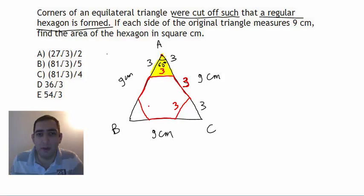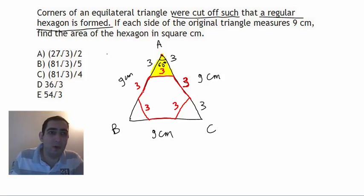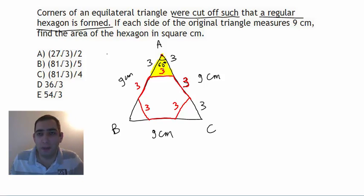By the same reasoning at each corner, all sides of the hexagon are equal to 3. So we have a regular hexagon with side length 3. To find its area, we'll calculate the area of the whole triangle ABC and then subtract the three small corner triangles.